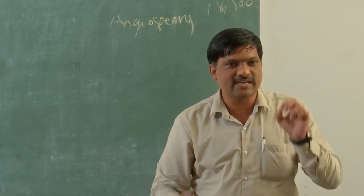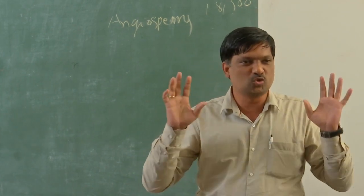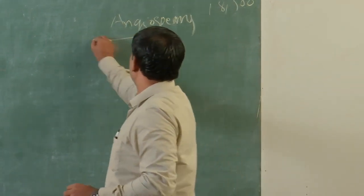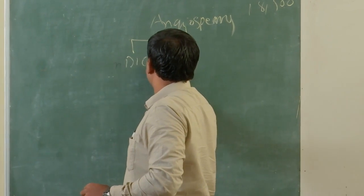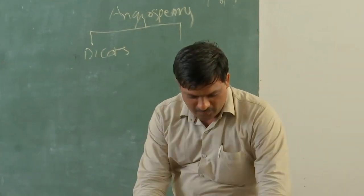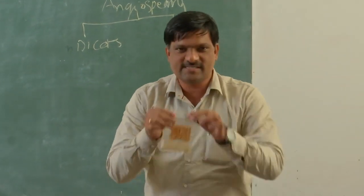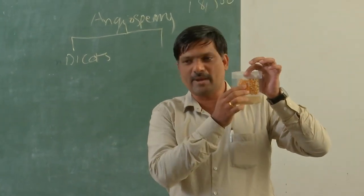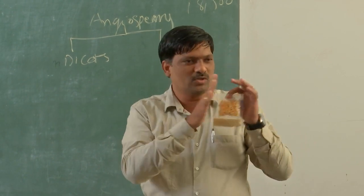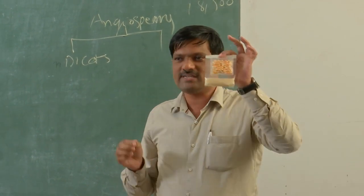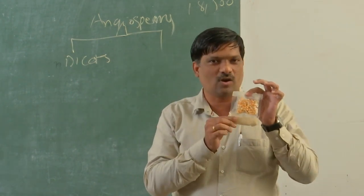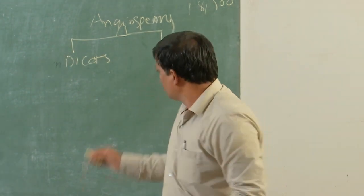If any seed contains two cotyledons, we group it as a dicot. Now look at rice and maize — we cannot split these seeds into two equal halves, because they have only a single cotyledon. These are called monocots.